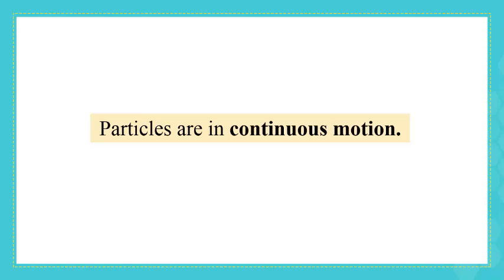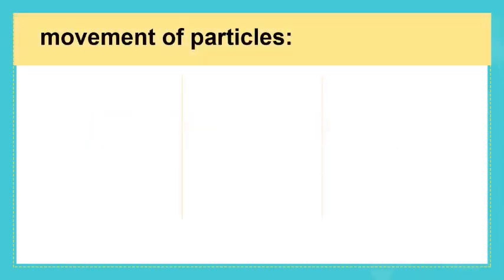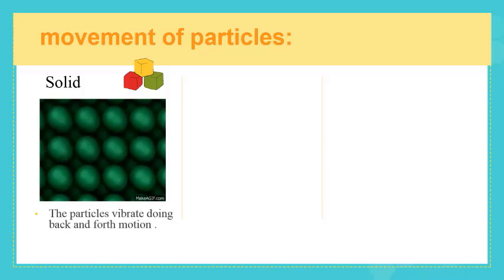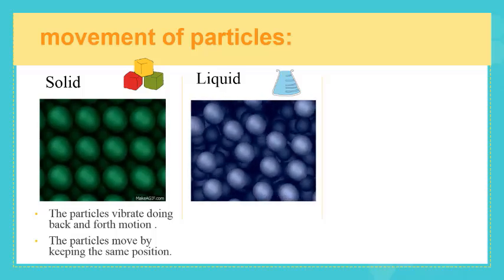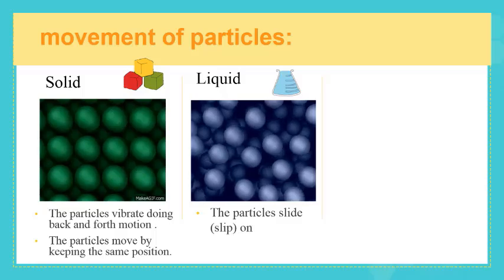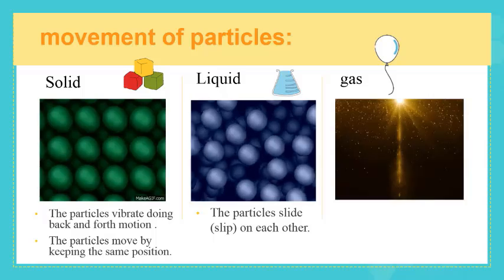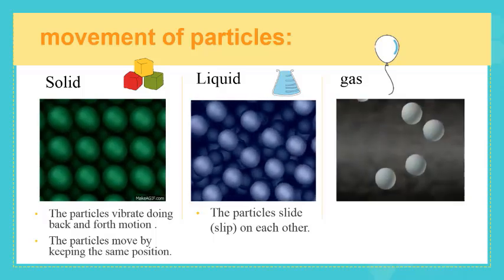Now again, remember that particles are in continuous motion. So let's sum up everything we discussed before about the movement of particles, starting with solid. The particles of a solid vibrate in a back and forth movement. So these particles move by keeping the same position. The particles of a liquid slide over each other, while the particles of a gas move freely and randomly in all directions.